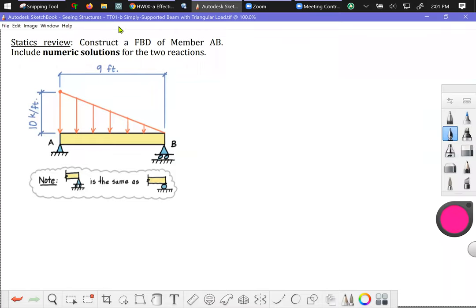Hello! In this example, we would like to construct a free body diagram, FBD, of this simply supported beam called member AB. We're also asked to include numeric solutions for the two reactions, and that's something that should be implied even if it didn't state that explicitly. When someone asks you to construct a free body diagram and they give you values, they probably want values on your solution.